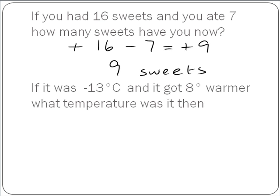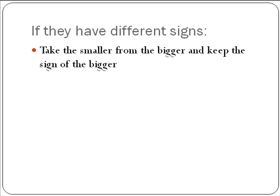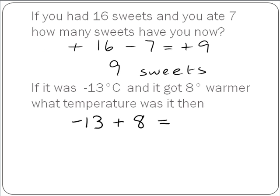Our second example. If it was minus 13 degrees Celsius and it got 8 degrees warmer, what temperature was it then? So this time we started with minus 13, and if it got 8 degrees warmer we're adding 8. Our signs are different, so we're going to take the smaller from the bigger and keep the sign of the bigger. So 8 from 13 leaves us with 5, and we're keeping the sign of the bigger which is minus.